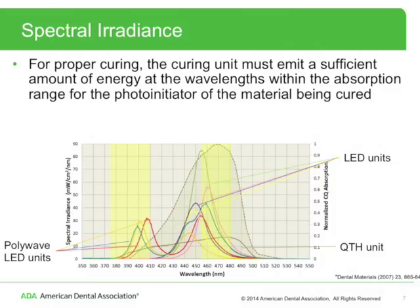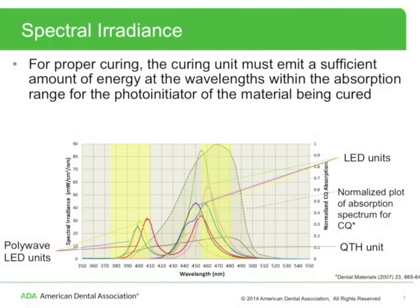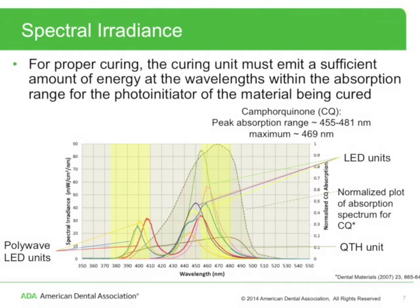This figure displays the spectral emission plots for different LED and quartz tungsten halogen curing units, along with a normalized plot of the absorption spectrum for camphorquinone. Camphorquinone is the most commonly used photo initiator in dental resin formulations. The region shaded in yellow, from approximately 455 to 481 nanometers, is defined as the approximate peak absorption range for camphorquinone. In general, the greater the percentage of the spectral emission curve for a curing unit that overlaps the peak absorption range for camphorquinone, the better.